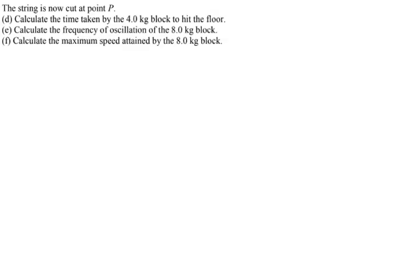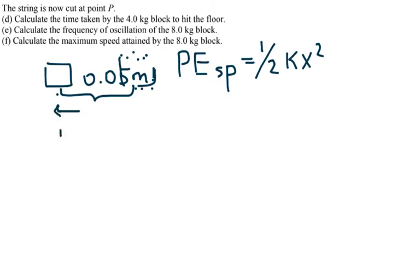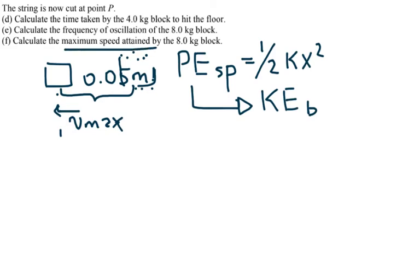For the last part, calculate the maximum speed attained by the 8 kilogram block. When the block is stretched by 0.05 meters from equilibrium, it has maximum spring potential energy equal to one-half × k × x². When the block returns to the equilibrium position, it has maximum velocity and the spring has no more potential energy — all potential energy converts to kinetic energy.